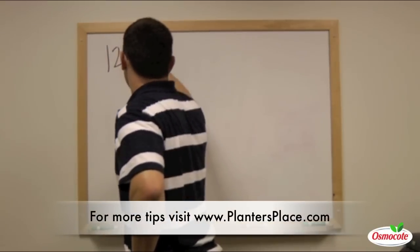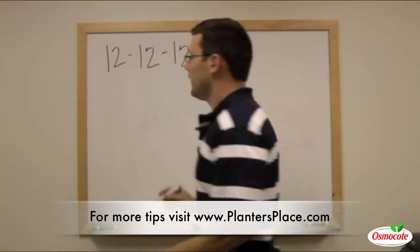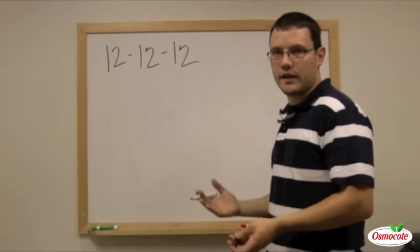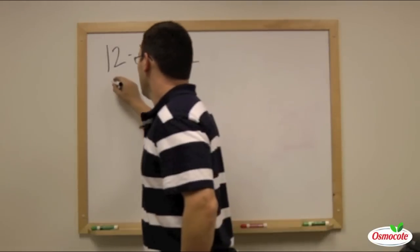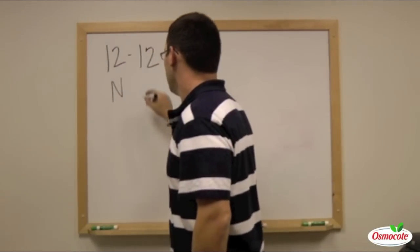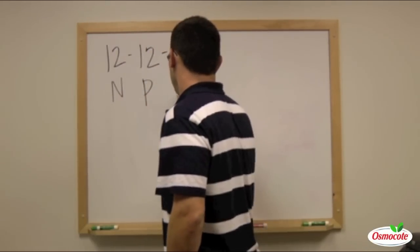12, 12, 12. So those numbers represent the percentage of the total amount of that fertilizer that is nitrogen, phosphorus, and potassium.